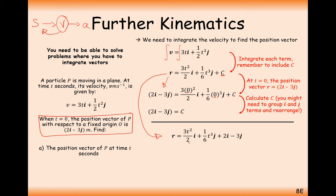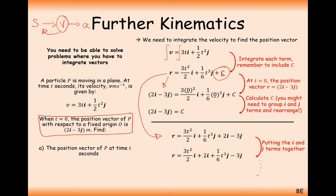So r equals 3t squared over 2 i plus a sixth t cubed j plus 2i minus 3j. Bear in mind that the c component is a vector, not a single numerical value. Rearranging to group i's and j's together and factorising: r equals (3t squared over 2 + 2)i plus (a sixth t cubed − 3)j.